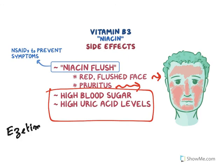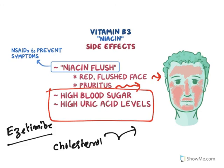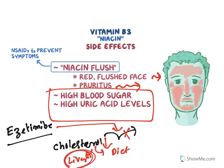One more drug is ezetimibe. Ezetimibe inhibits cholesterol absorption from the intestine itself. Whatever cholesterol comes from the diet is absorbed, and this absorption is inhibited by ezetimibe, so cholesterol levels are reduced. The source of cholesterol is two things: it can come from the liver or from the diet. The rest of the drugs reduce liver cholesterol production, like statins, whereas this drug reduces dietary cholesterol by inhibiting its absorption. It does have gastrointestinal adverse effects.